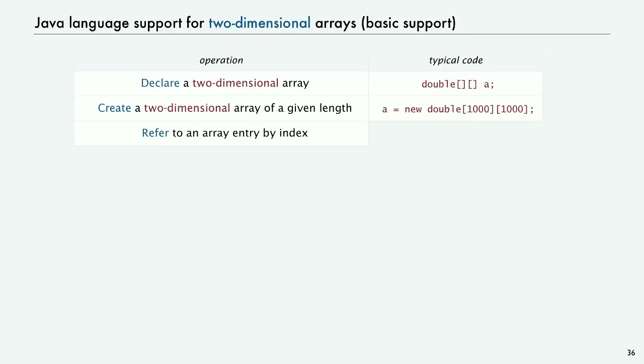And then to refer to an array entry by index, we just put, after the name of the two-dimensional array, we put a row name inside brackets and a column name inside brackets.